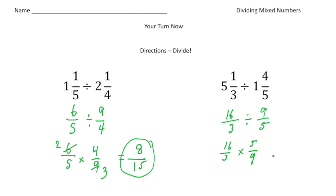So sixteen times five gives us eighty. And three times nine gives us twenty-seven. And I know that twenty-seven can go into eighty two times with twenty-six left over. So our answer is two and twenty-six twenty-sevenths.